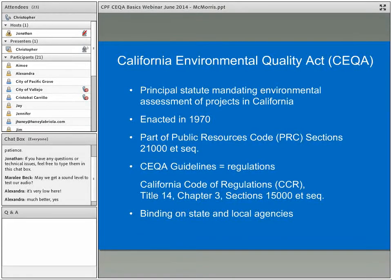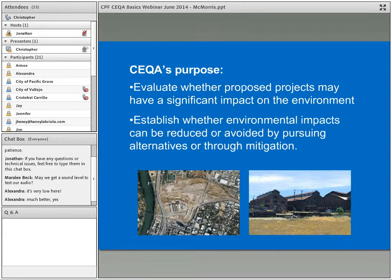CEQA is the principal statute mandating environmental assessment for projects in California. Enacted in 1970, it's part of the Public Resources Code. The CEQA guidelines are the regulations that state and local agencies use to conduct CEQA, and they are part of the California Code of Regulations. CEQA is binding on both state and local agencies. CEQA's overall purpose is to evaluate whether proposed projects may have a significant impact on the environment and establish whether those impacts can be reduced or avoided through alternative plans or mitigation.